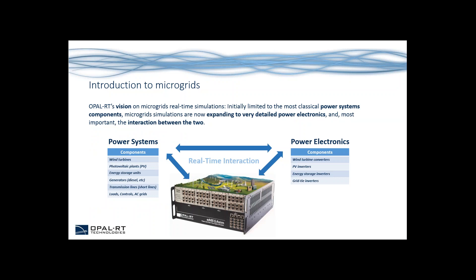At Opal RT, our vision on microgrids real-time simulation goes like this. Initially limited to the most classical power system components, microgrid simulations are now expanding to very detailed power electronics and, most importantly, the interaction between the two. Classical power system components of microgrids are typically wind turbines, PVs, energy storage units, generators, transmission lines, loads, controls, and AC grids. And now we are coupling all this with power electronic components such as wind turbine converters, PV inverters, energy storage inverters, and grid tie inverters.